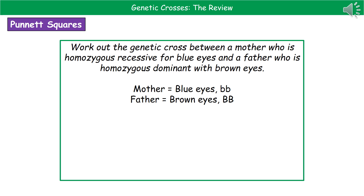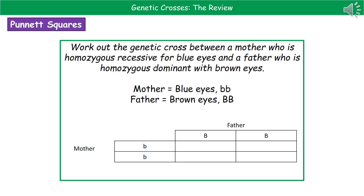Write down the phenotype and genotype of both parents. The mother is homozygous recessive for blue eyes, so her phenotype is blue eyes and her genotype is two lowercase b's. The father is homozygous dominant with brown eyes, so his phenotype is brown eyes and his genotype is two capital B's. Split them into individual gametes and draw the Punnett square — father's gametes on one side, mother's on the other. Put a small circle around each gamete. Whatever is at the top of the column, write into the two squares beneath it.